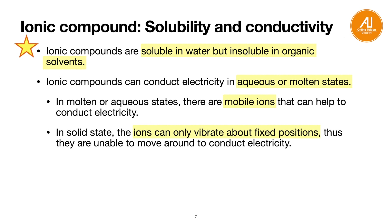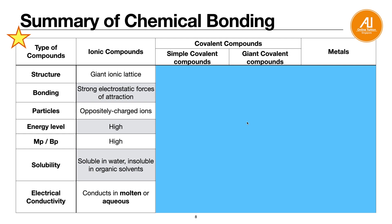Remember whatever is highlighted — these are the keywords your teacher will be looking for. Summary: four-point template — structure: giant ionic lattice; bonding: strong electrostatic forces of attraction; particles: oppositely charged ions; energy level: high energy. This leads to high melting and boiling point. Solubility: soluble in water, insoluble in organic solvents. Conductivity: can only conduct in molten or aqueous state — solid cannot conduct.